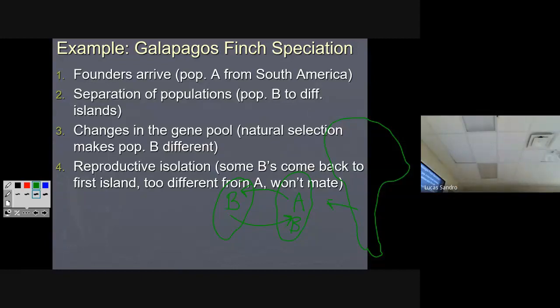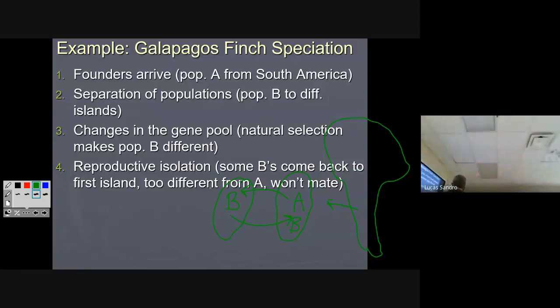Specifically, which type of reproductive isolation is that? They don't want to — that's behavioral. Don't want to, as opposed to can't. Can't was them being on different islands, but when they made it back, now it's behavioral.